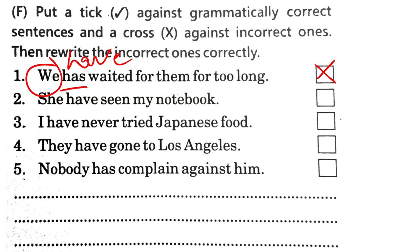'She has seen my notebook.' With 'she', we use 'has', so this is correct. 'I have never tried Japanese food' — this is absolutely correct. 'They have gone to Los Angeles' — this is also correct.